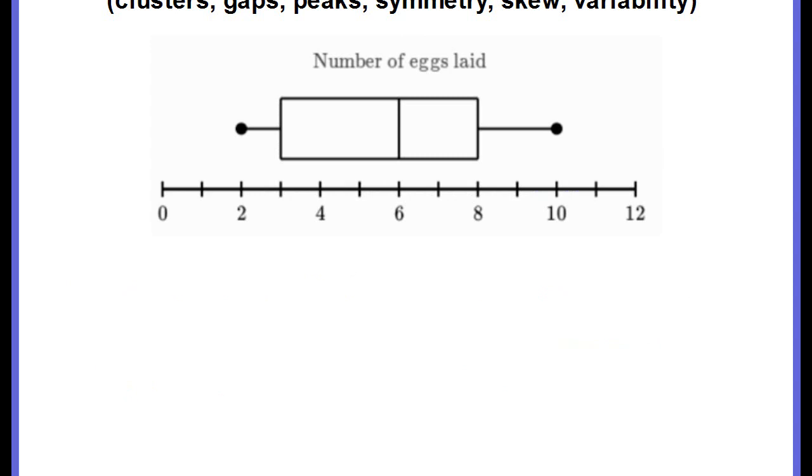Let's do this one. Describe the shape and distribution of each data set. Okay, so this is a different type of graph. It is a box plot, and it doesn't show the individual data pieces. What it shows is the spread of the data. So we can't tell if there are any clusters or gaps or peaks.